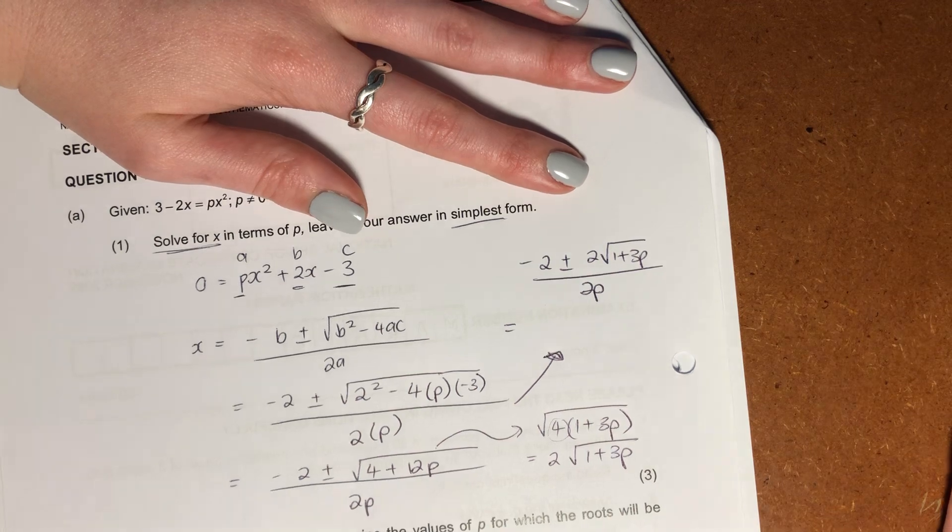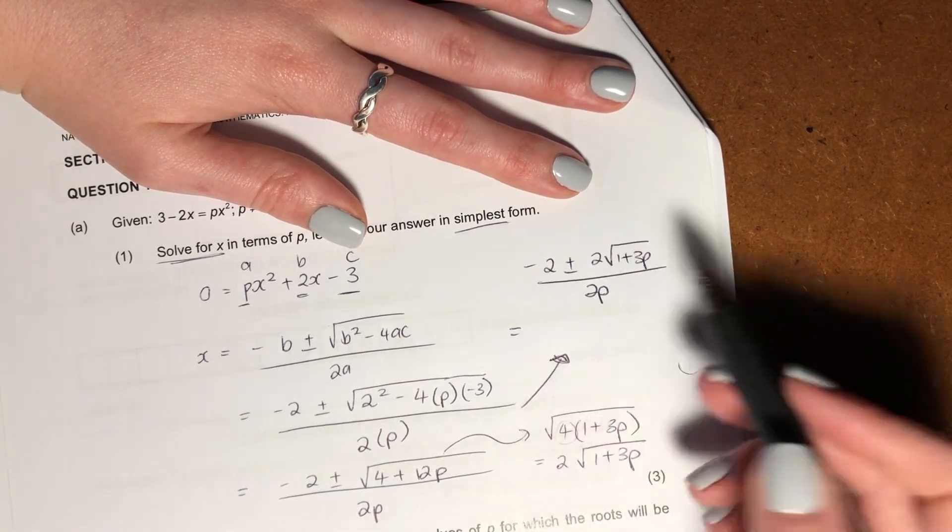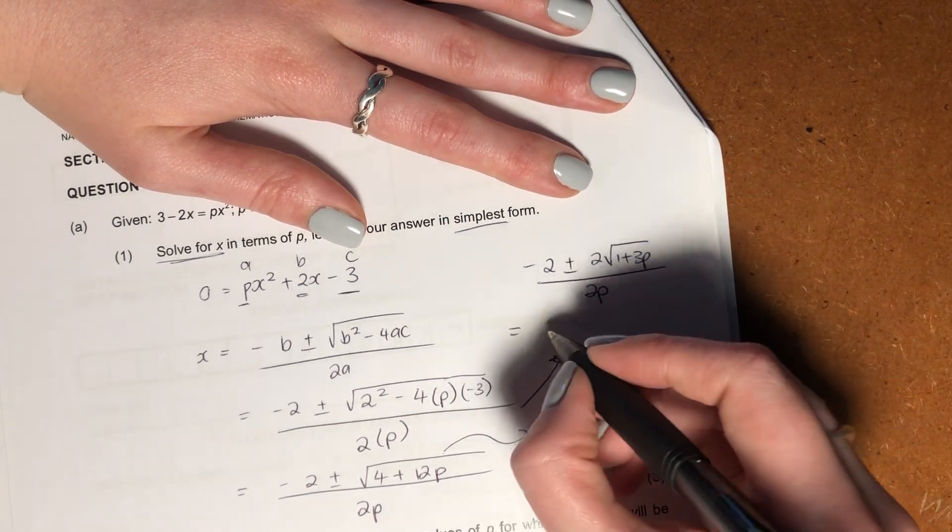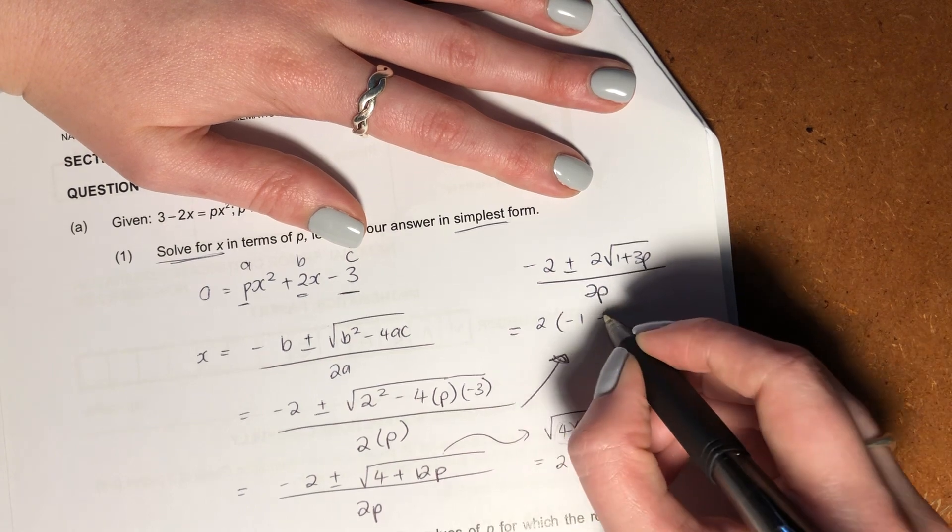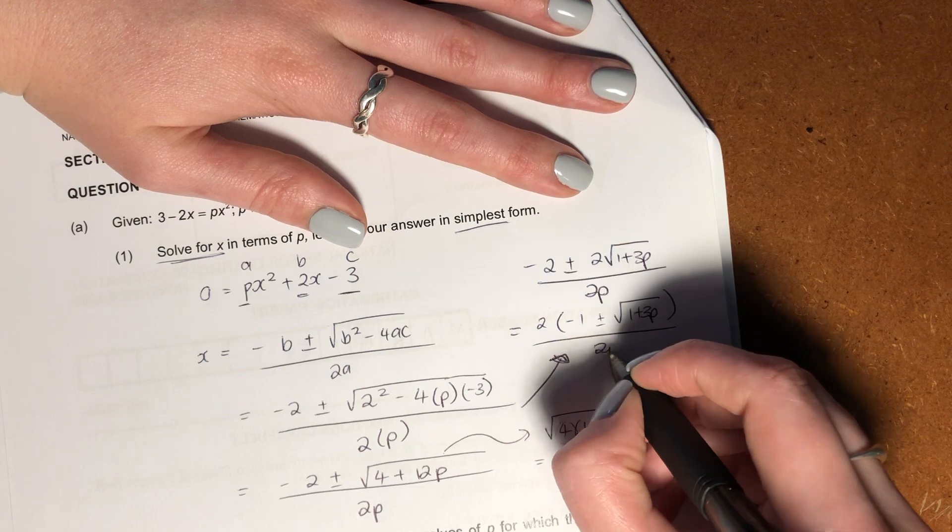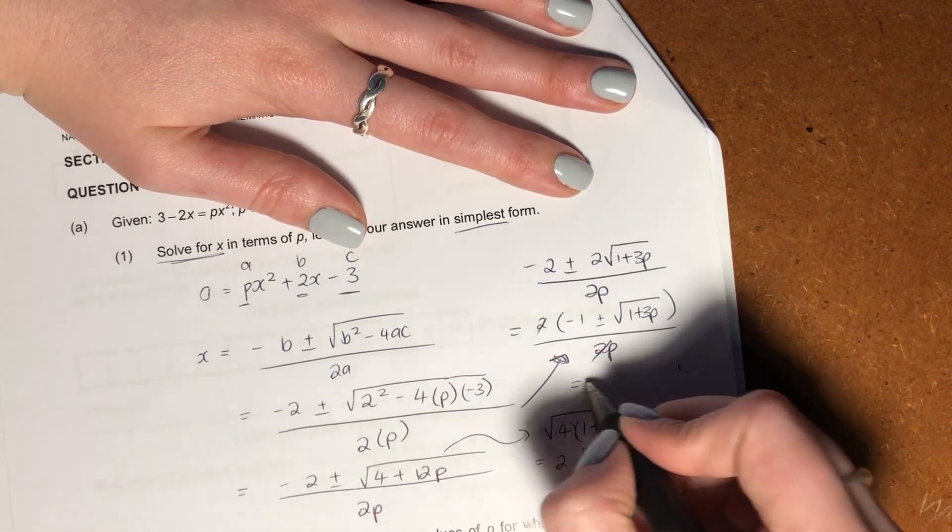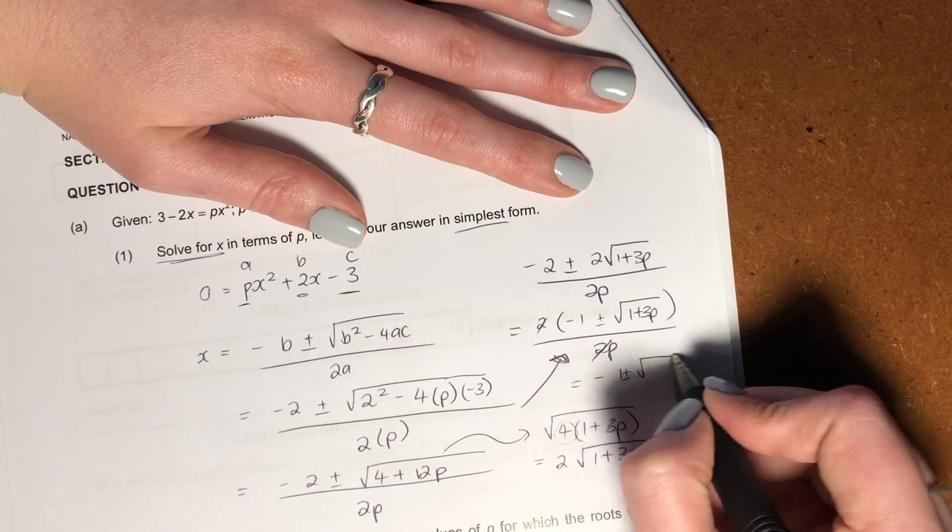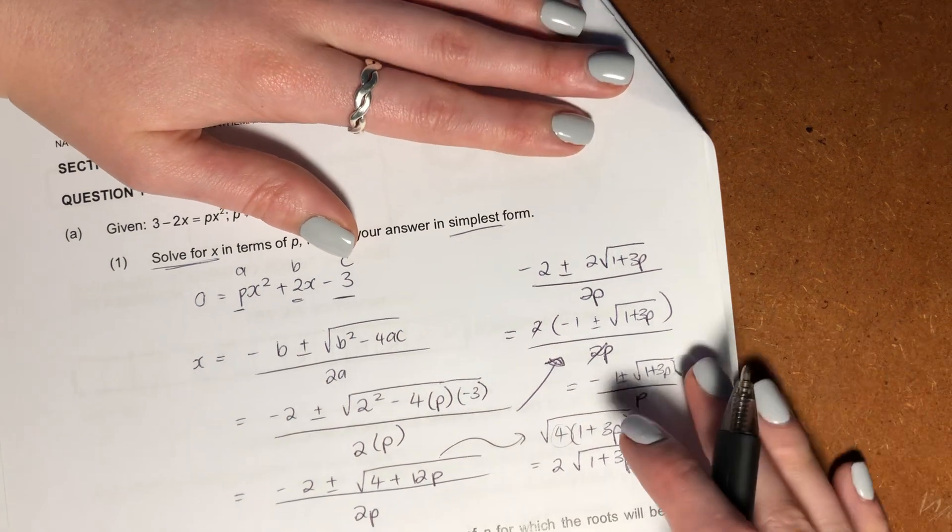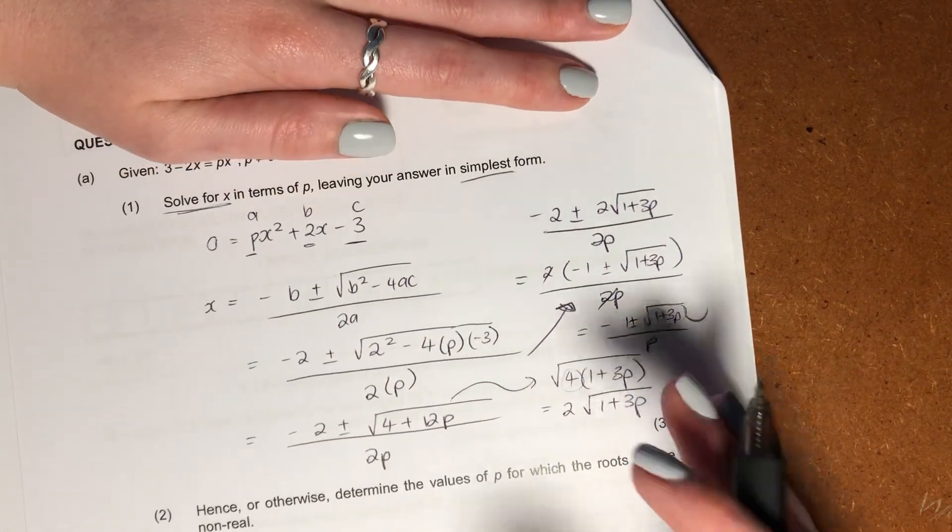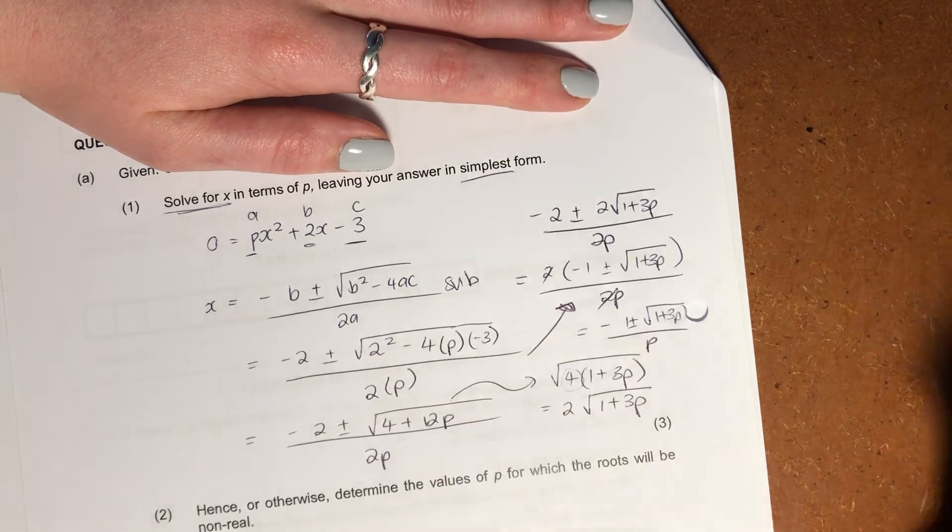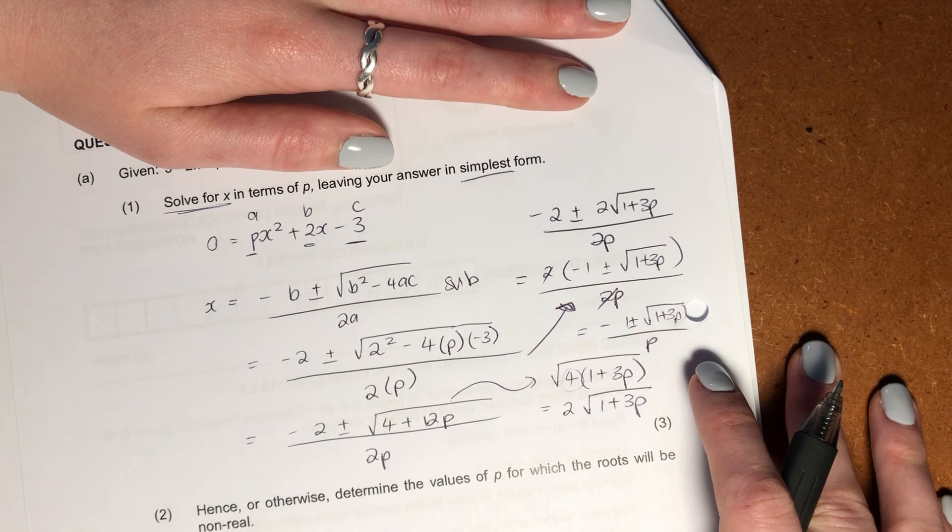Then what we're going to do now is we're going to say, oh, well now every single term that I have in this quadratic equation has a common factor of 2. So let me go and take that out. So I'm going to take 2 out there, that becomes negative 1 plus minus square root of 1 plus 3p over 2p. Cancel those 2s and there is my answer. Now you could be saying, jeepers, that's a lot of work for 3 marks. And yes, to a degree it is, but it's fairly simplistic. First thing you do is you substitute in, and then you simplify and then your answer is there.